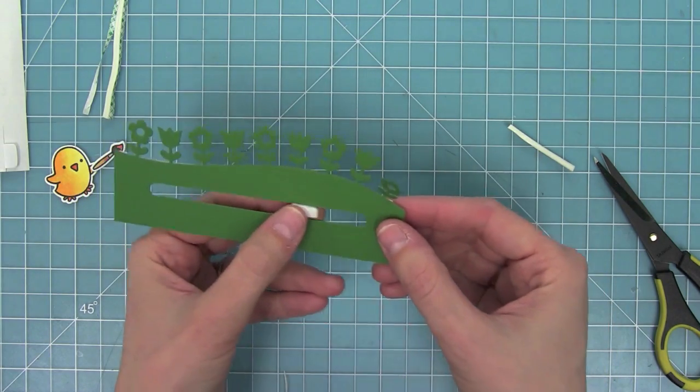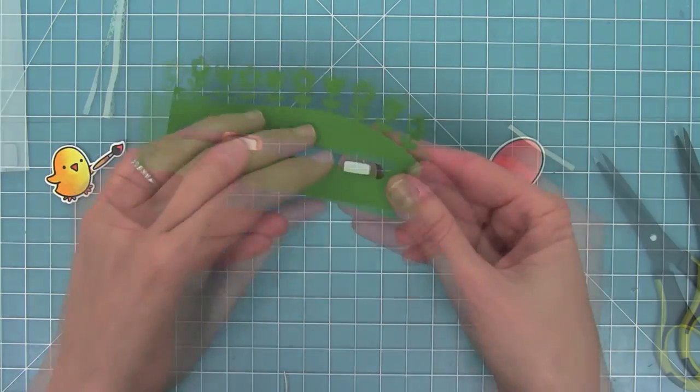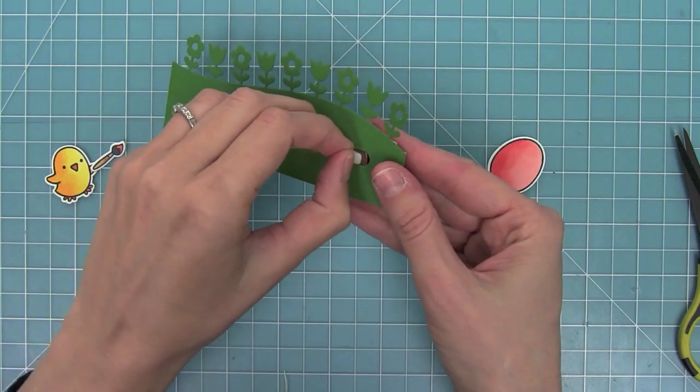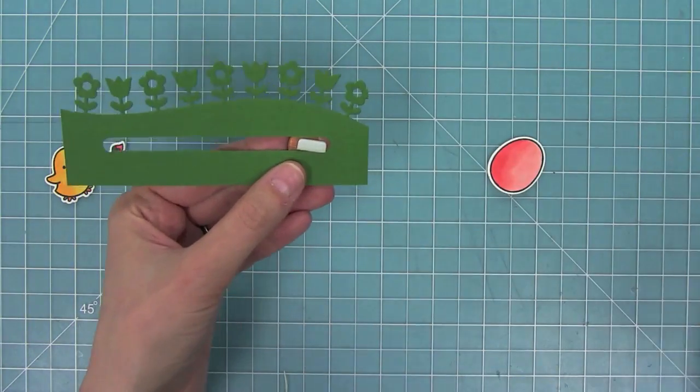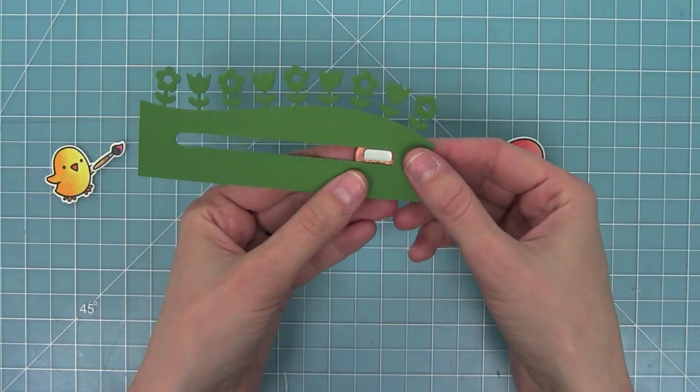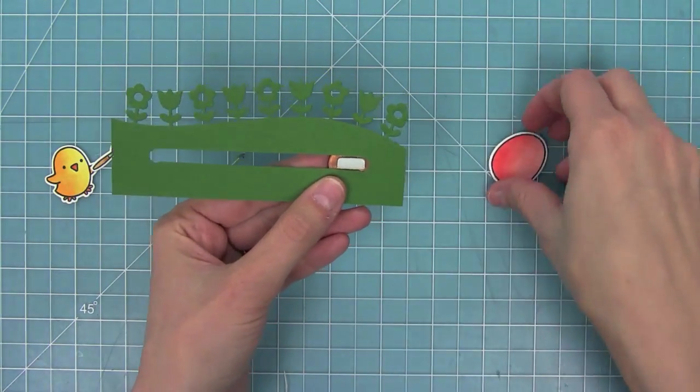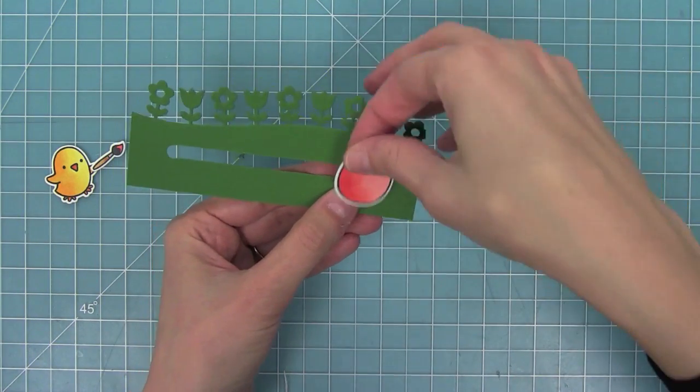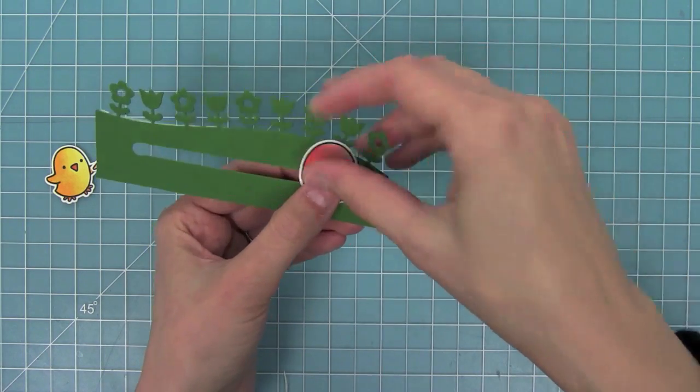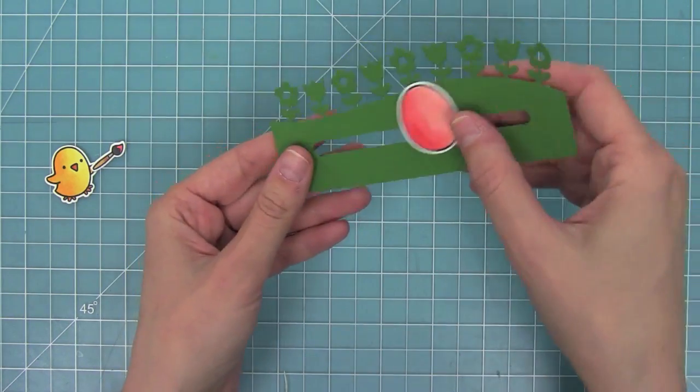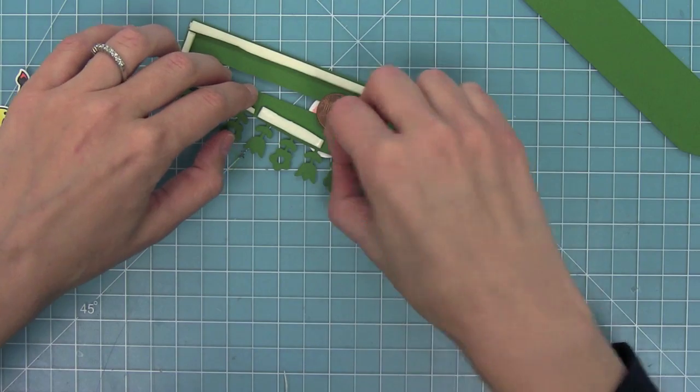You'll see that that foam piece fits perfectly in that track. You can just trim it to fit just slightly smaller than that track. Now I can peel off the liner and attach my egg to that foam piece. I'm going to hold that right in place and then I can line that egg right on top. It's going to adhere to that foam square, and now we've kind of trapped that penny in. You can see that it's able to move in that track.